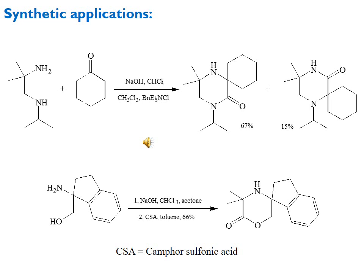The product from the primary amine gives 67% yield while the product from the secondary amine gives only 15% yield. This difference is explained by steric hindrance: the secondary amine experiences steric hindrance between the large cyclic ketone and the group attached to nitrogen, reducing its yield. The second example uses beta-hydroxy amine reacting with sodium hydroxide, chloroform, and acetone, using camphorsulfonic acid as catalyst and toluene as solvent, giving 66% yield of the morpholinone product.